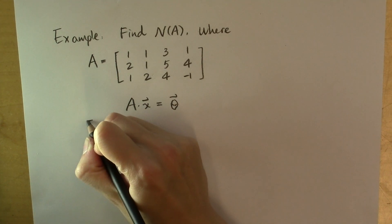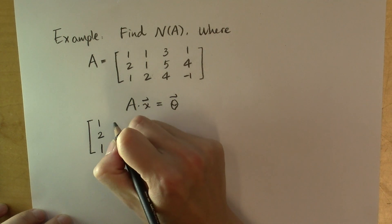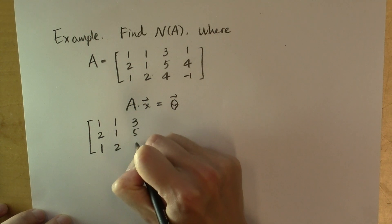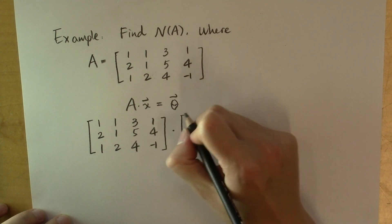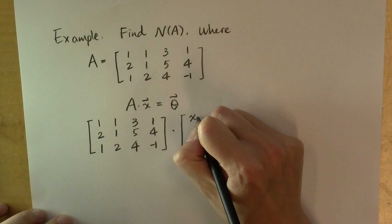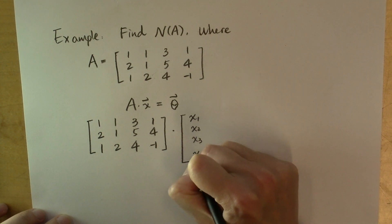So in this example, we're solving the homogeneous system with the coefficient matrix: 1, 2, 1; 1, 2, 3; 5, 4, 1, 4, -1. The unknown vector x being x sub 1, x sub 2, x sub 3, x sub 4.